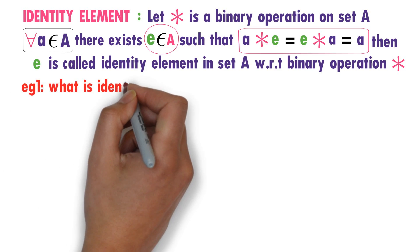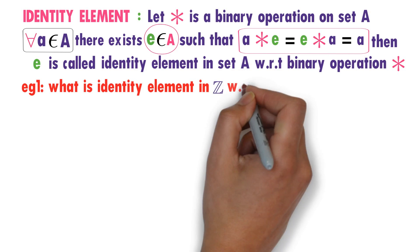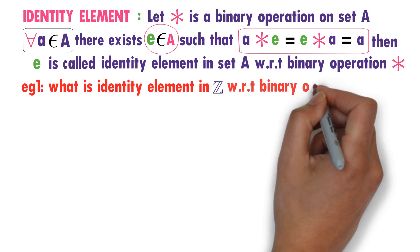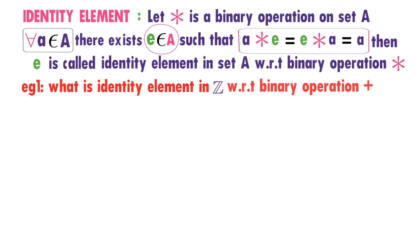I'll explain this definition with an example. What is the identity element in Z with respect to binary operation addition? Here, star is addition.